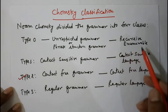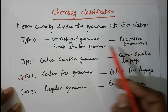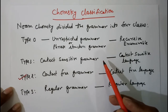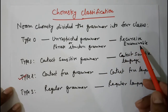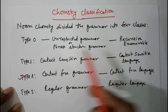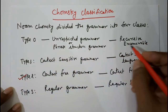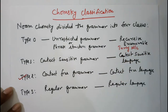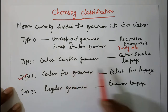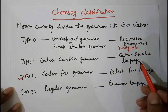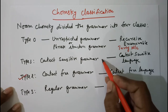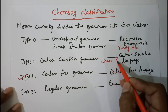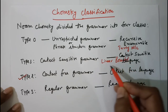Corresponding to these grammars and languages, there are machines which are going to accept these languages. For Type 0, the machine is the Turing Machine. For Type 1, that is context-sensitive language, the machine is Linear Bounded Automata, or LBA.